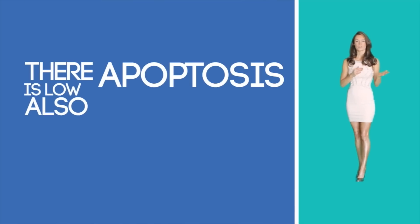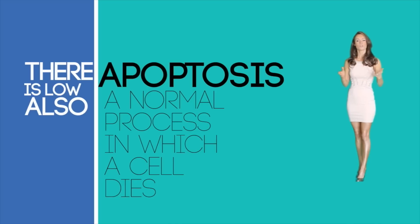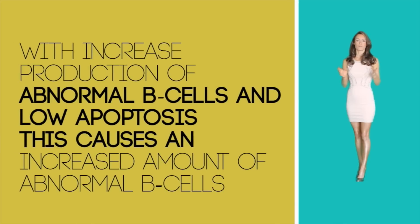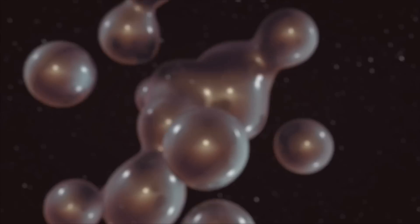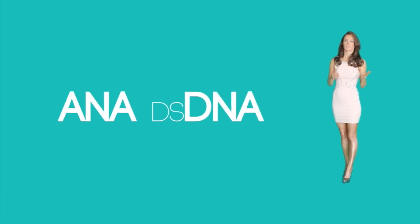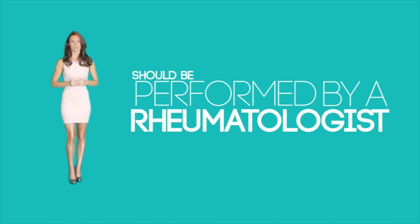Another contributing factor is low apoptosis of B cells. Apoptosis is the normal process in which a cell dies. With increased production of abnormal B cells and low apoptosis, there is an increased amount of abnormal B cells circulating. These autoantibodies are found via lab tests called ANA and dsDNA. A patient may go a long time without knowing they have lupus due to general symptoms like tiredness or aches and pains. Proper diagnosis should be performed by a rheumatologist.